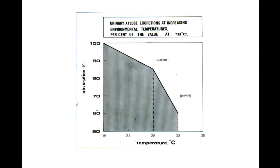I measured intestinal absorption in adults by urinary xylose absorption test. I maintained for 4 hours 15 adults in a cold environment at 18°C, and repeated the tests in 10 adults at 28°C and in 5 adults at 33°C. The ordinate reports xylose absorption in warm environment as percentage of absorption in cold environment. There is a significant absorption decrease at 28°C that becomes larger, about 40%, at 33°C. It is well known that energy expenditure decreases in a warm environment. Maintaining the same intake, energy availability increases, and a greater energy availability decreases absorption.